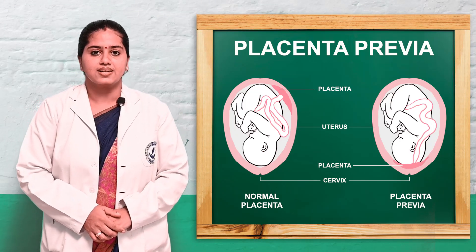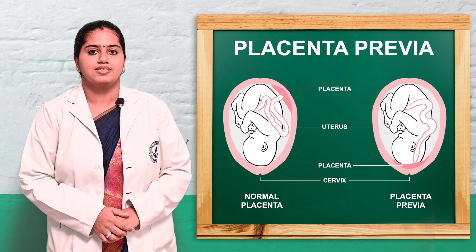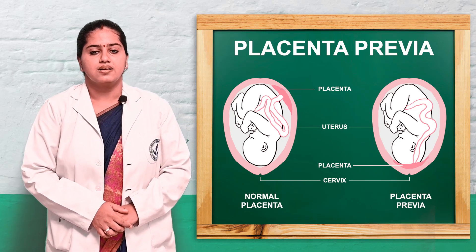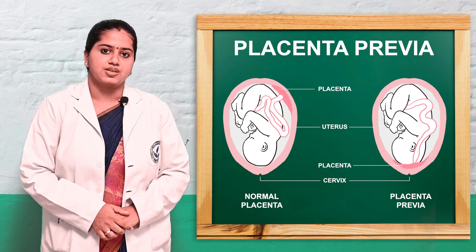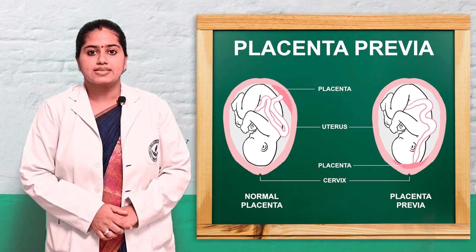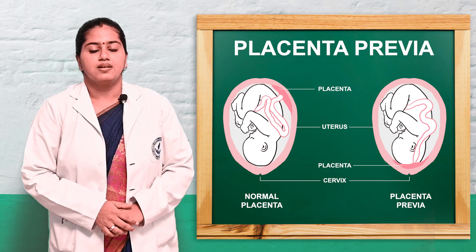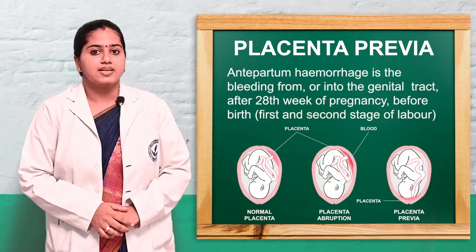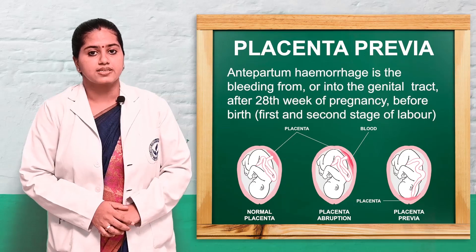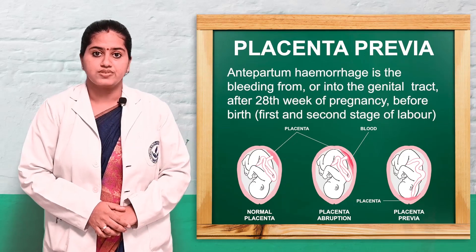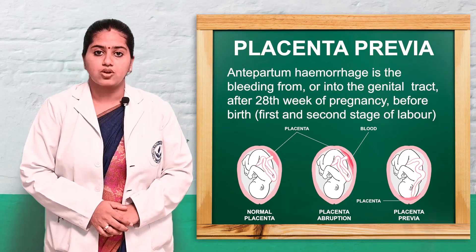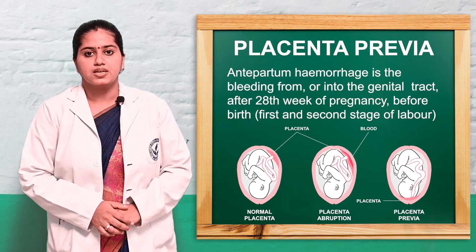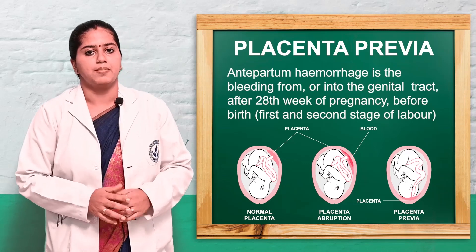Today we will cover a topic that comes under midwifery and obstetrical nursing — that is the bleeding that comes in later pregnancy. The condition is APH, known as antepartum hemorrhage. Antepartum hemorrhage is the bleeding that takes place in the genital tract after the 28th week of gestation during pregnancy till the birth of the baby, including the first and second stage of labor.